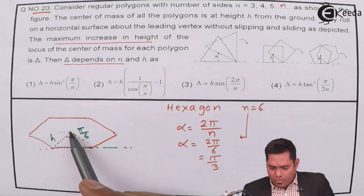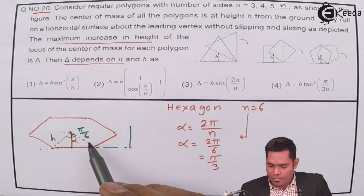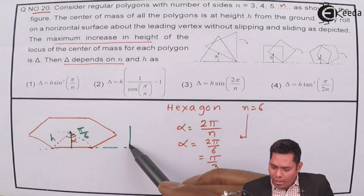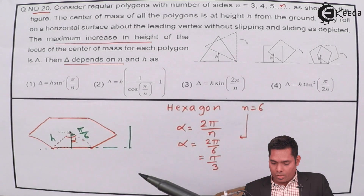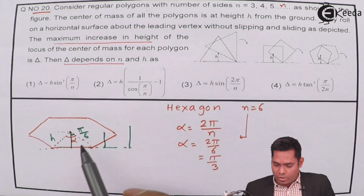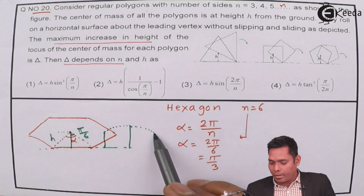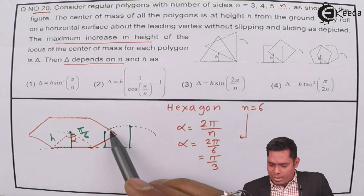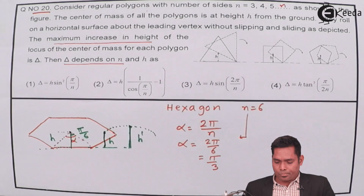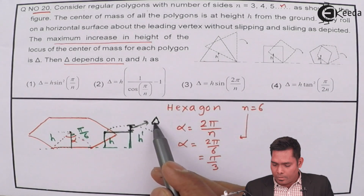When this turns, this line will become like this — it will become vertical. When this line becomes vertical, that is the maximum height of the center of mass. So from the initial position to the maximum position, the center of mass follows a locus. Initially it was at height h, and at maximum it becomes h dash. This is the locus, and this maximum height is what we are interested in. This length is delta.